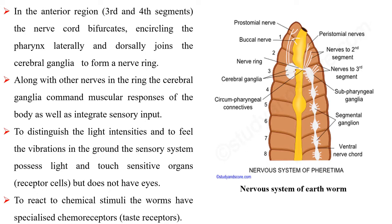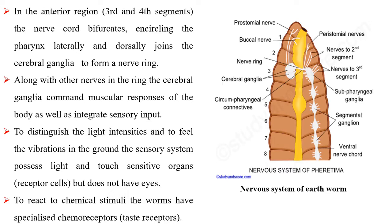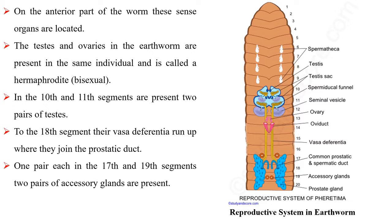To distinguish light intensities and to feel vibrations in the ground, the sensory system possesses light and touch sensitive organs but does not have eyes. To react to chemical stimuli, the worms have specialized chemoreceptors. These sense organs are located on the anterior part of the worm.